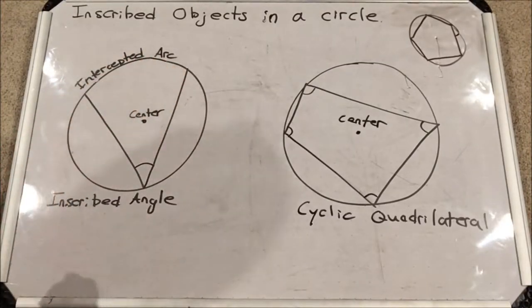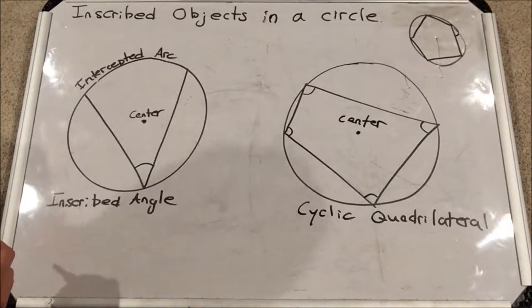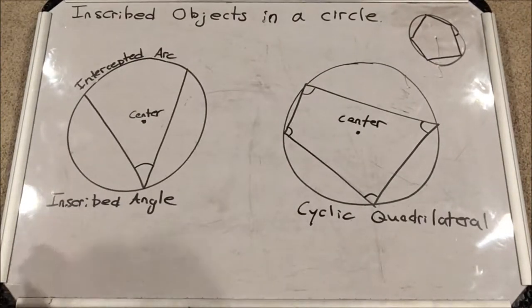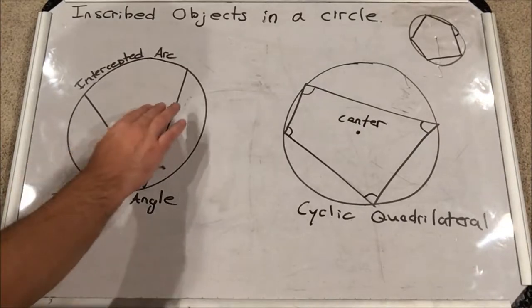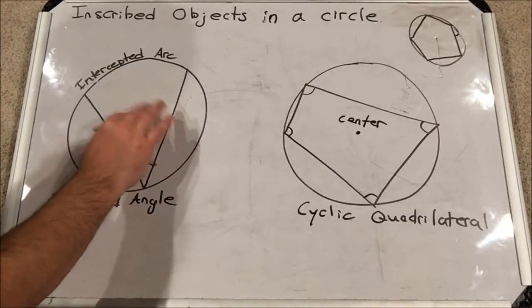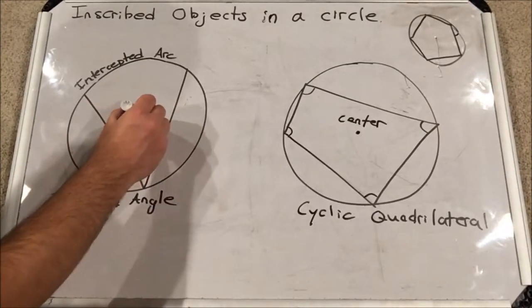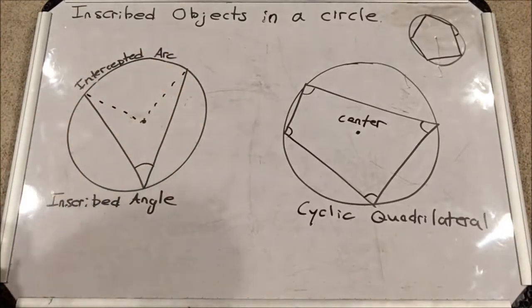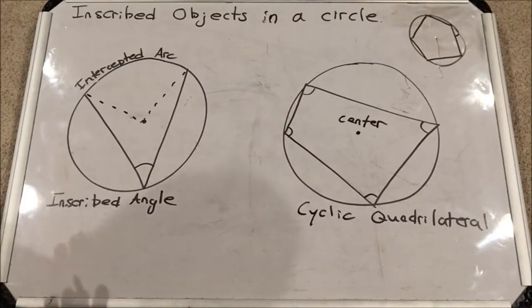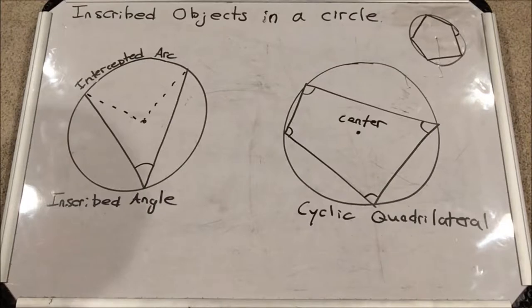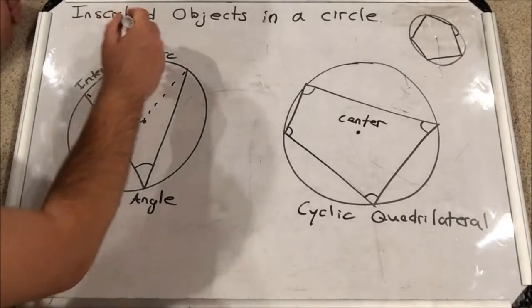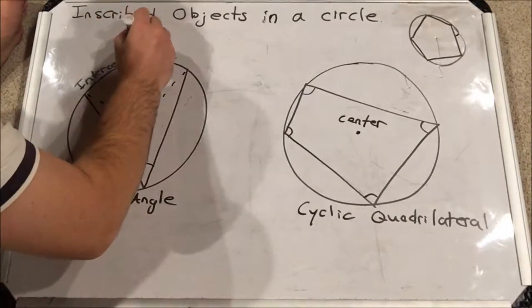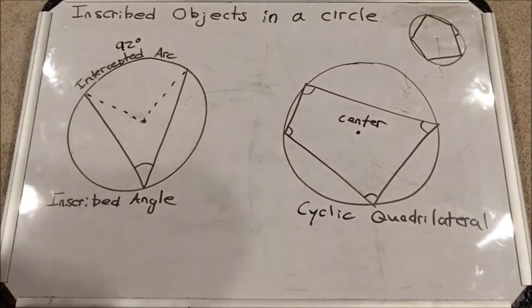Now you might be familiar with what is called a central angle. That is an angle from the center of the circle to an arc, and it intercepts the arc as well. Let's look at a central angle that intercepts this particular arc. I'm gonna say this particular arc is 92 degrees, just ballpark estimating. And so the central angle, by definition of central angles, is also 92 degrees.